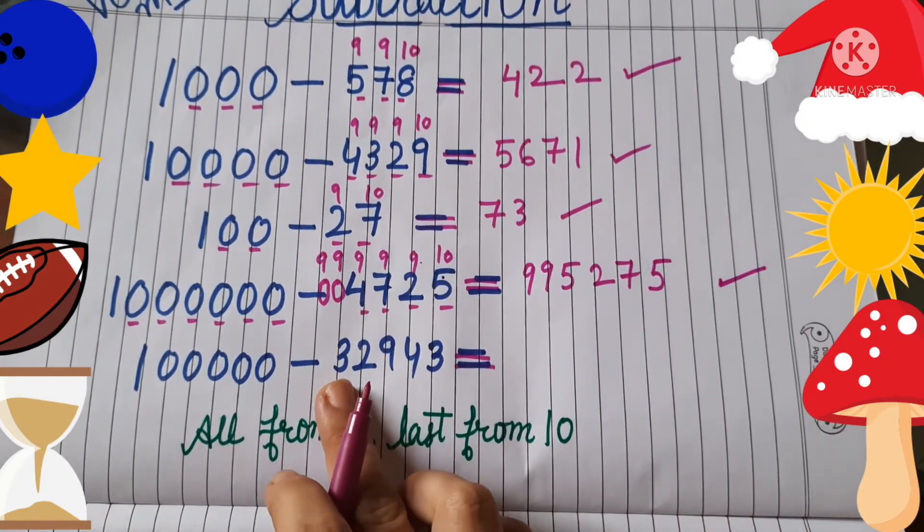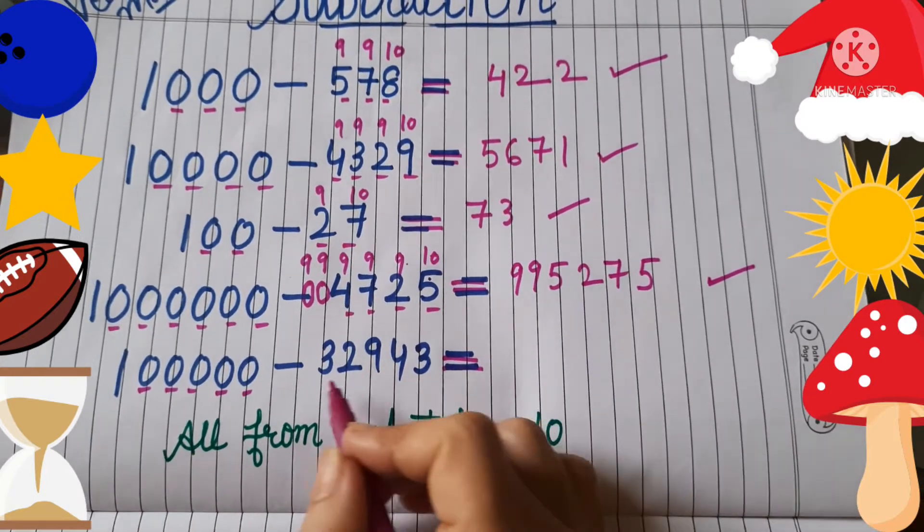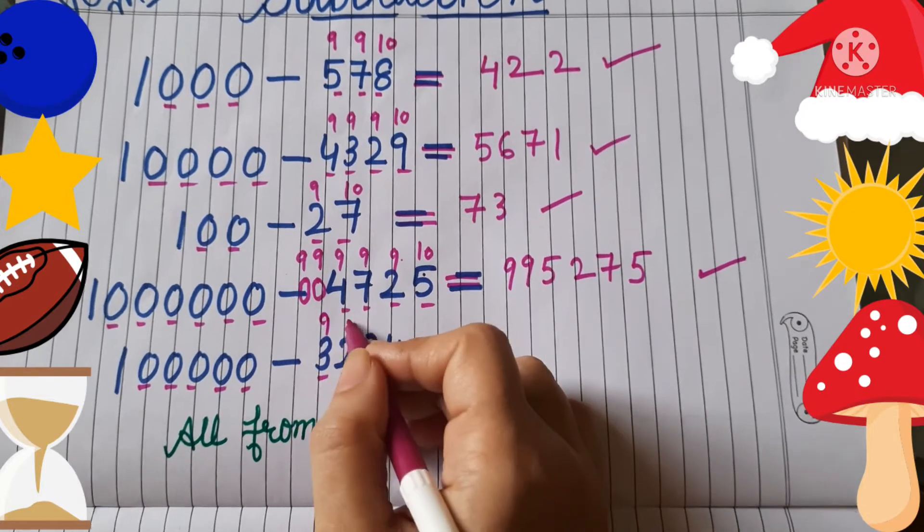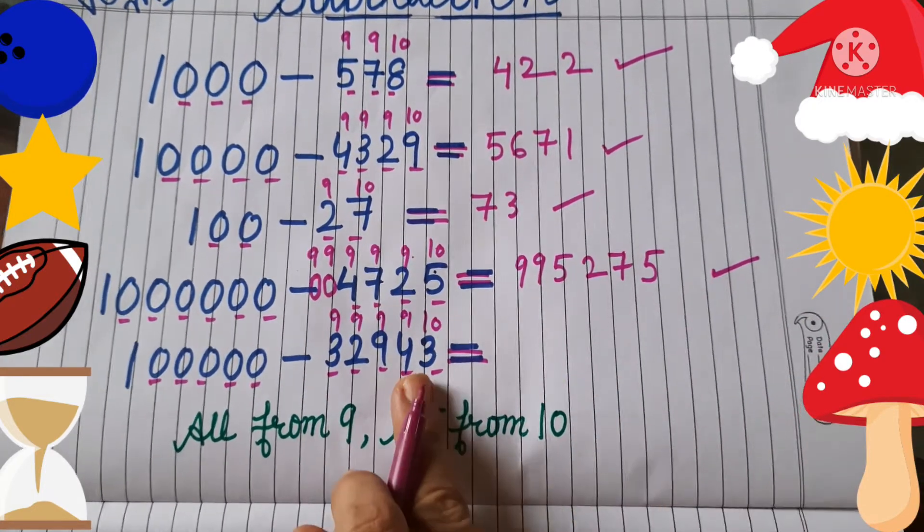Let's move on to the last one. 1, 2, 3, 4, 5 zeros. And the digits are also 5. So let's start. 9, 9, 9, and the last is 10. Do it.